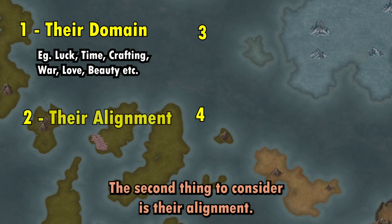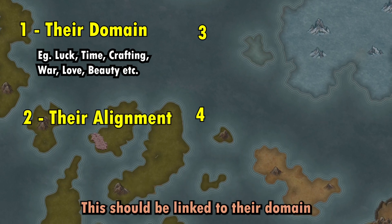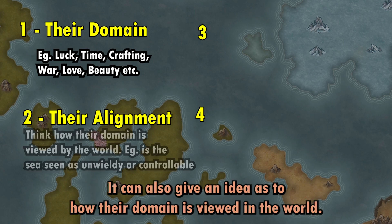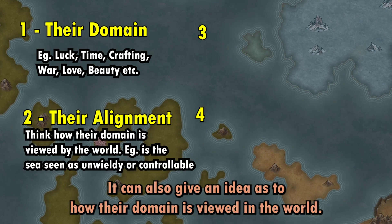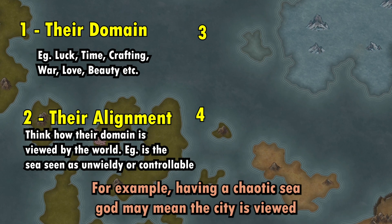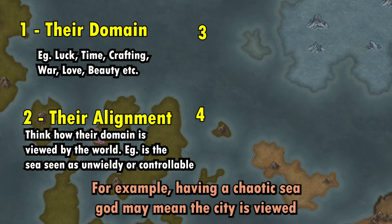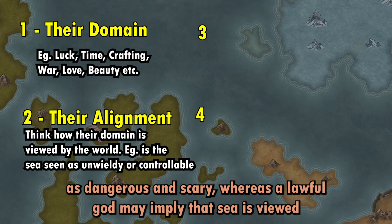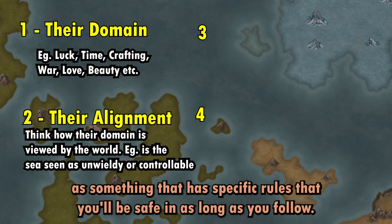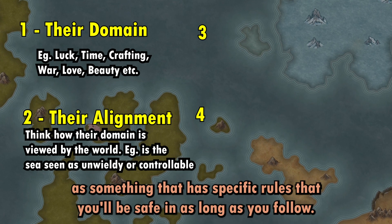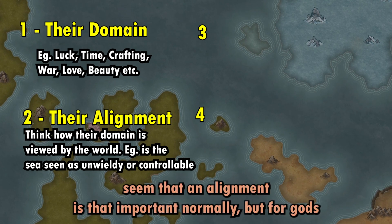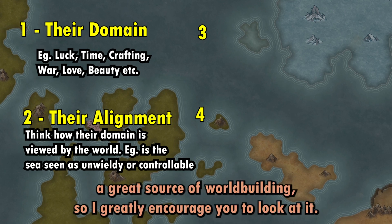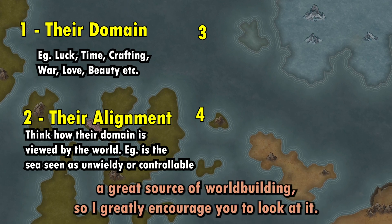The second thing to consider is their alignment. This should be linked to their domain and gives an impression of how they act and what their teachings are. It can also give an idea as to how their domain is viewed in the world. For example, having a chaotic sea god may mean the sea is viewed as dangerous and scary, whereas a lawful sea god may imply the sea has specific rules that you'll be safe in as long as you follow. Alignment can be a great source of world building for gods, so I greatly encourage you to look at it.